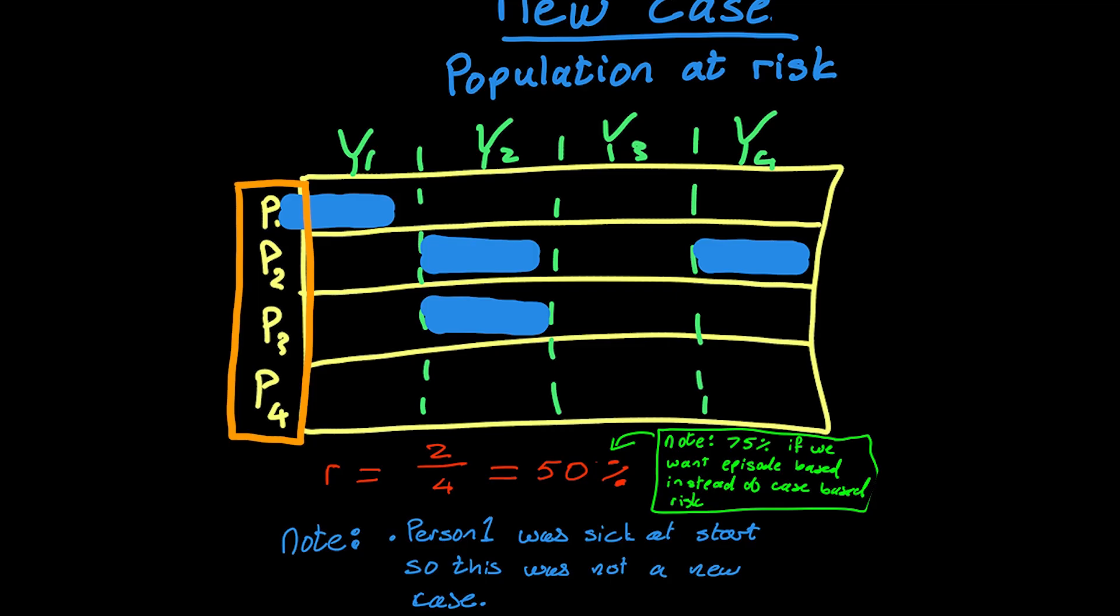I've got four people, person 1, 2, 3, and 4, and years 1, 2, 3, and 4. So four years, four people. Person 1 comes into our time frame already sick, right? So that blue line there would not represent a new case, and so wouldn't contribute to the numerator, the number of people that got sick. So that's the first thing I want to point out. It's new cases. If a person comes into the time frame with the disease, that incidence is not counted.